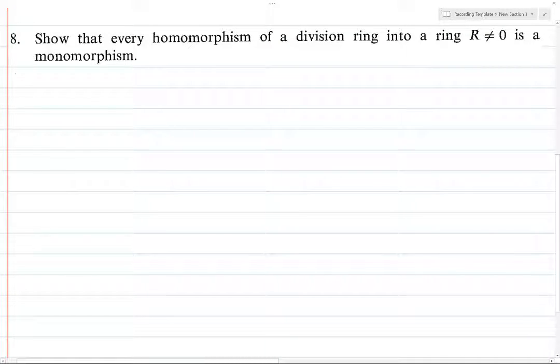All right, let's do another problem. So let phi from D to R, R not equals 0, be a ring homomorphism